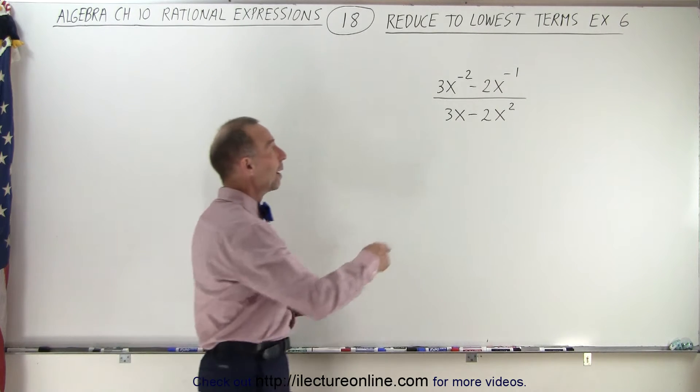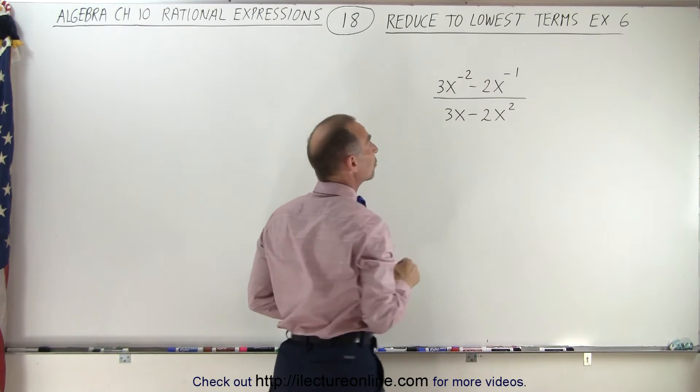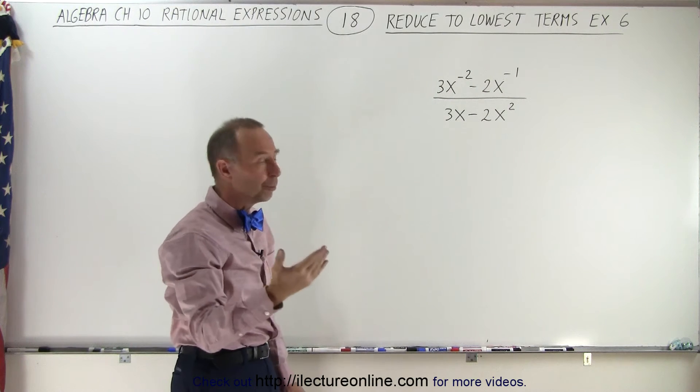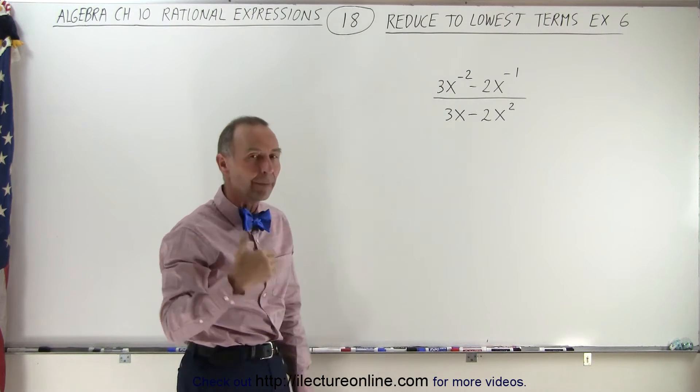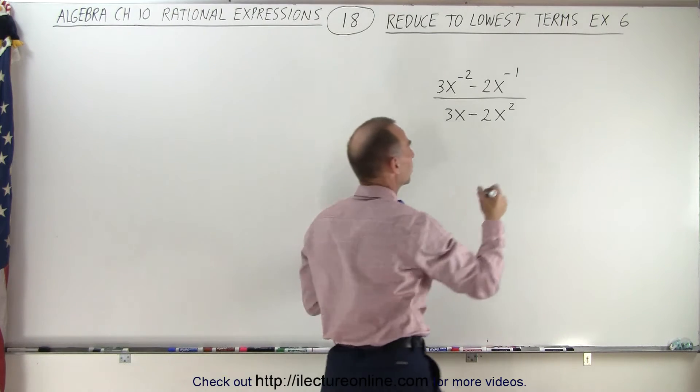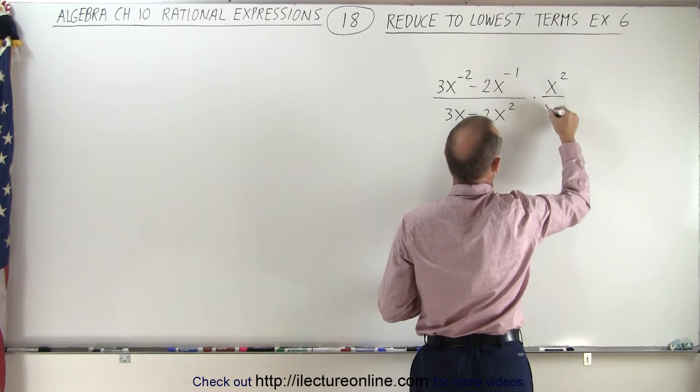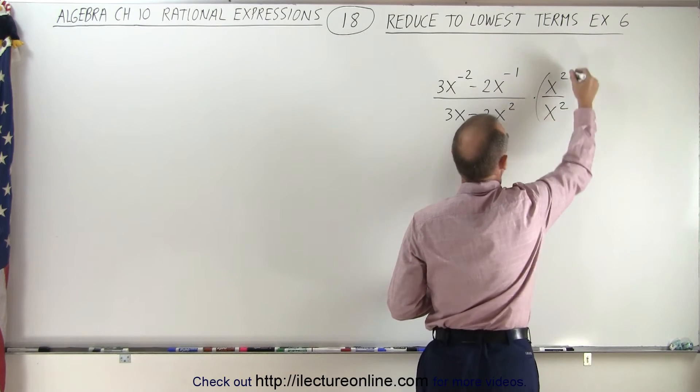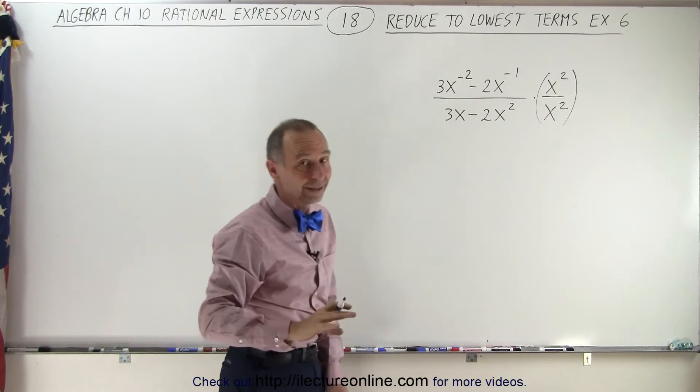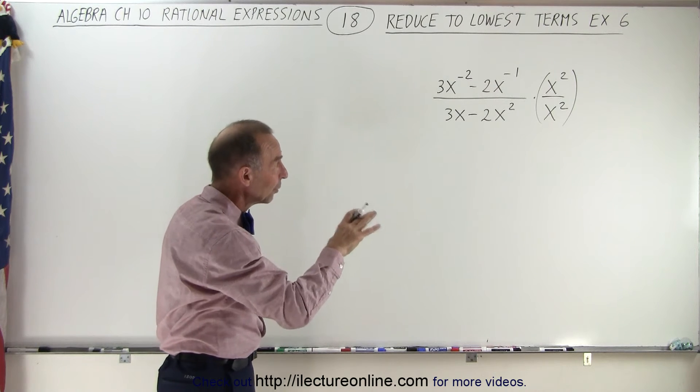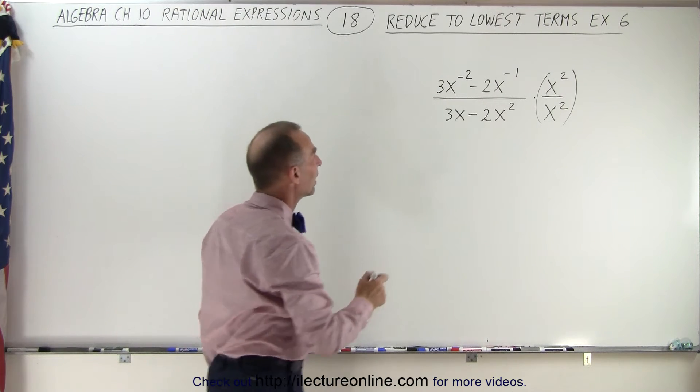In this case, since we have an x to the minus 2 as the largest negative exponent, we're going to multiply both the numerator and the denominator by x to the positive 2. In other words, the numerator times x to the second power, and of course we need to do exactly the same to the denominator, otherwise the problem is no longer the same. As long as we do that, we're okay. So let's go ahead and do that.